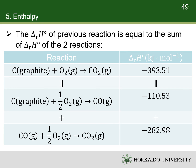For example, the complete oxidation of graphite to carbon dioxide is the sum of the incomplete oxidation of graphite to carbon monoxide and the oxidation of carbon monoxide to carbon dioxide. Thus, the enthalpy change of the complete oxidation of graphite is the sum of the enthalpy changes of the two reactions.